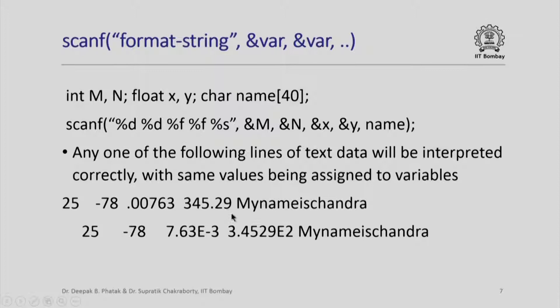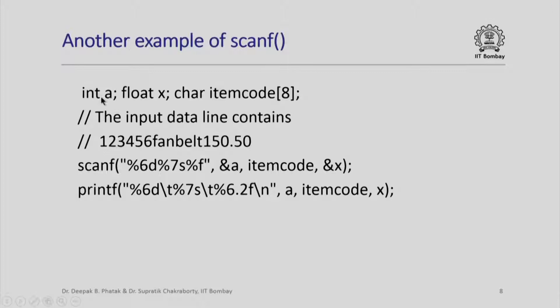Notice that cin would have accomplished the same thing, but scanf does it as per our format specification. The same format specification will work even if we give data in different layouts. So far it appears very similar to cin, but there is a special feature of scanf which permits us to do things we cannot do using cin. Consider this example: I have an integer variable a, a floating point variable x, and a character array item_code. Suppose the input data line contains: 12345fan belt150.50 — a continuous line with no blank in between. If I use cin to read these values, it will get confused because it cannot distinguish between the integer value, the character string, and the floating point value.